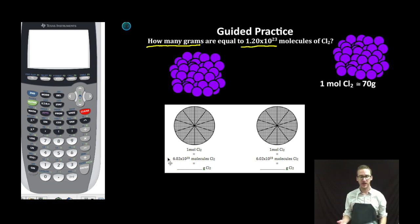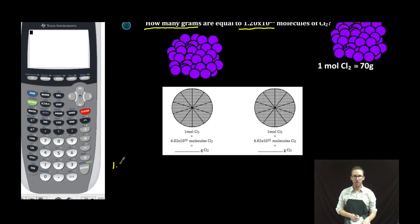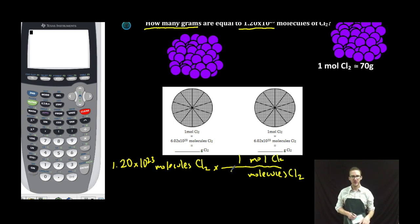Again, some of you geniuses out there might be able to do this in your brain. I like to work the dimensional analysis. I've got 1.20 times 10 to the 23 molecules chlorine times conversion factor. Molecules on the bottom so it cancels out. Moles of chlorine on the top. One mole of chlorine, Avogadro's number. I'm going to pause right here and go to my calculator.